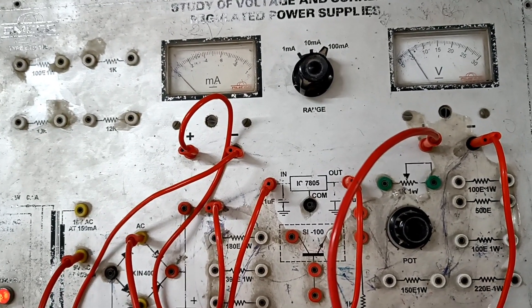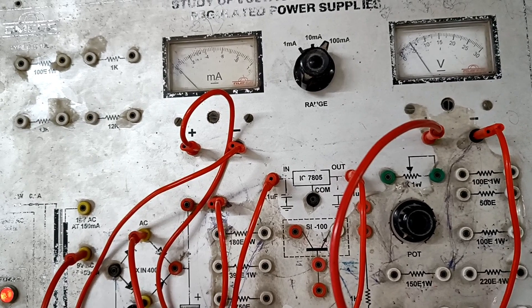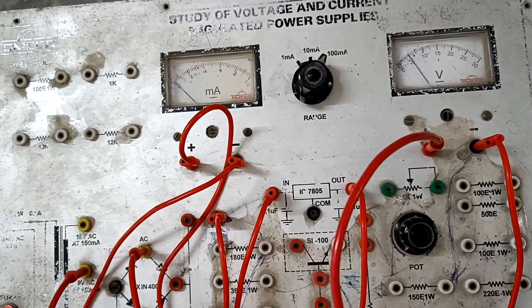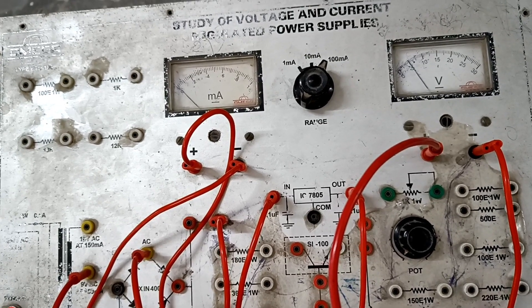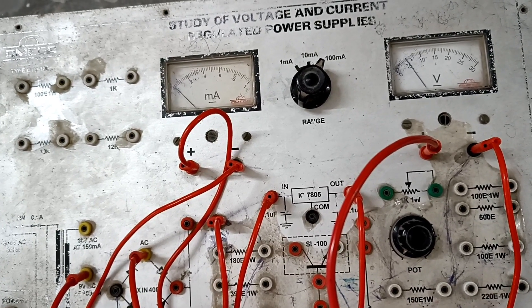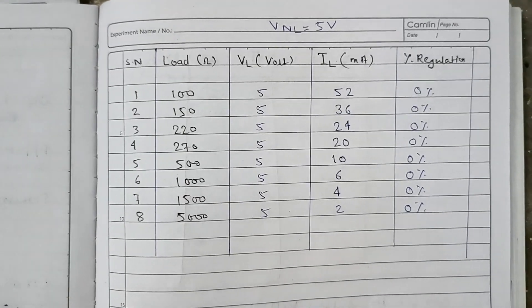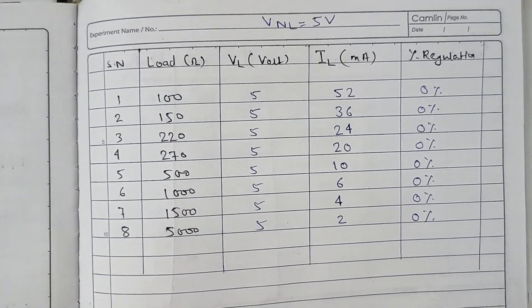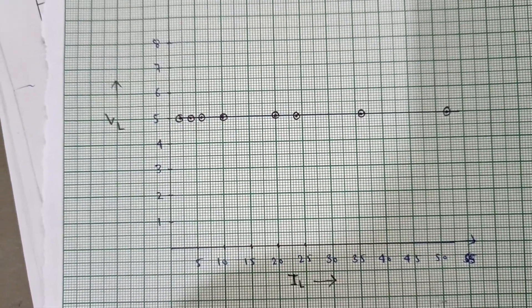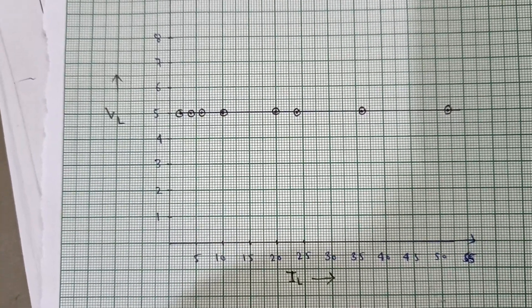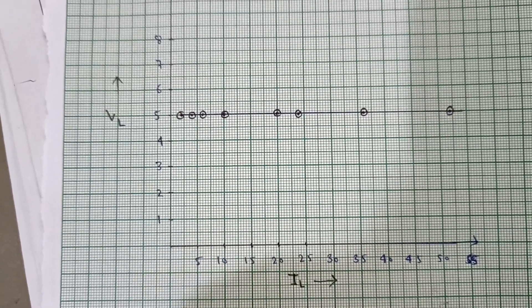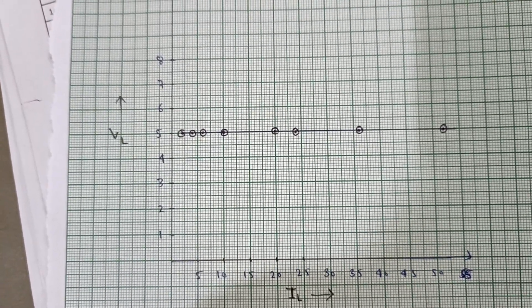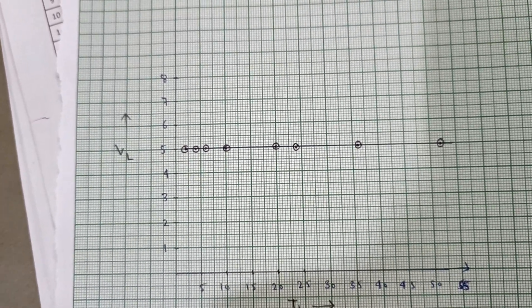Now let's look at our observation table. We have recorded the voltage, load current, and load resistance for various loads, and calculated the regulation percentage. The percentage regulation formula is: (VNL minus VL) divided by VL, multiplied by 100, where VNL is the no-load voltage and VL is the voltage under load. As we can see from the graph, the regulation percentage is almost constant across all loads, indicating that the IC regulator is doing an excellent job of regulating the voltage.